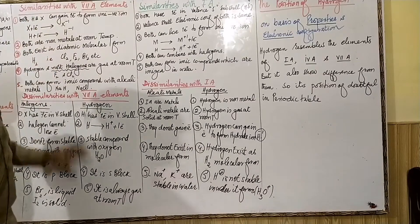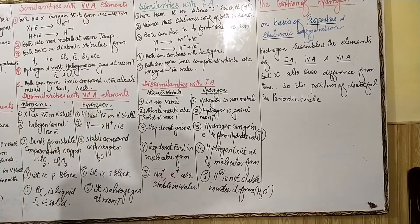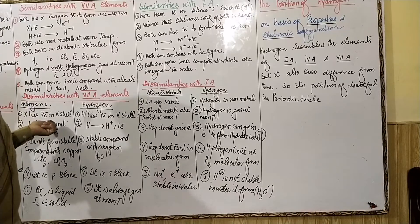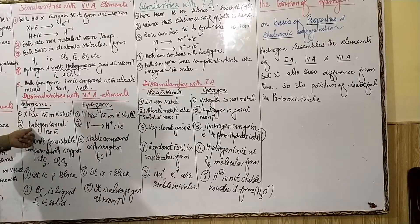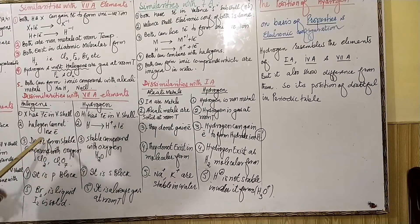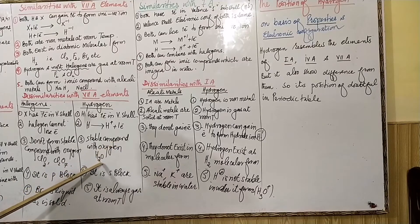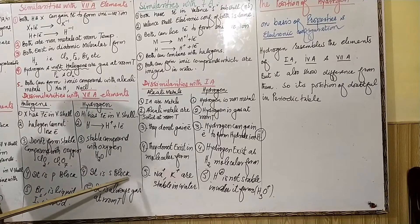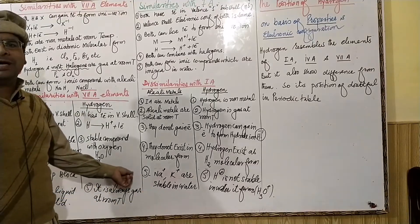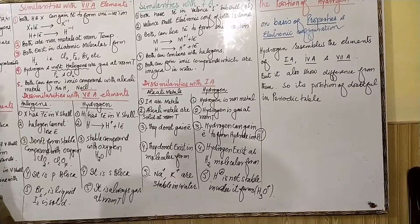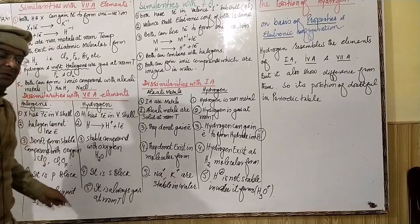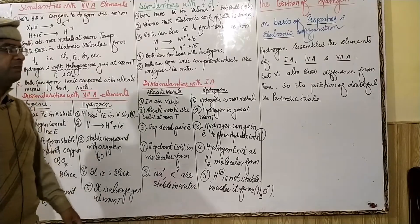Now the differences from Group 7A: halogens have seven electrons in their valence shell, while hydrogen has only one. Halogens always gain electrons and never lose them, but hydrogen can lose an electron. Compounds of halogens with oxygen are not stable, whereas hydrogen's compound with oxygen (water, H₂O) is stable. Hydrogen is an s-block element, whereas halogens are p-block elements.